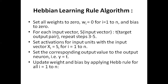The learning rule algorithm says: first, set all weights to zero — for i equals one to n, if we have multiple inputs, all weights for them will have zero values, and the bias will also be set to zero. So in the very first step, if you have three inputs x1, x2, x3, then weights w1, w2, w3 will all be set to zero, as well as the bias value. In the second step, for each input vector, suppose you have three input vectors, you will have a specific target output pair for each one.